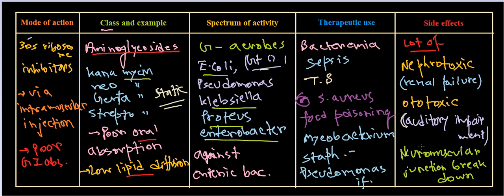Due to nephrotoxicity, ototoxicity, neuromuscular junction breakdown, hypersensitivity, and anaphylaxis, aminoglycosides are usually not taken as a single antibiotic treatment. They are typically combined with beta-lactam antibiotics. Beta-lactams are bactericidal and their combination with aminoglycosides increases antibacterial activity while reducing toxicity to a certain extent — hence the use of combinatory drug therapy. That's the introduction to aminoglycosides.